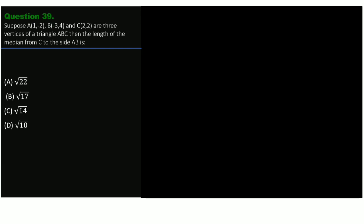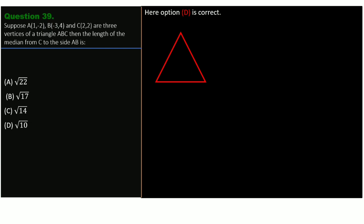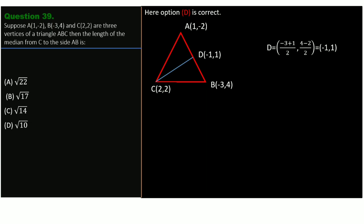Option D is the correct one. First, draw the triangle and name the vertices A(1, -2), B(-3, 4), and C(2, 2). Draw the median from C to side AB and name the midpoint D. The point D bisects side AB, so by applying the midpoint formula we get D as (-3+1)/2, (4-2)/2 = (-1, 1).